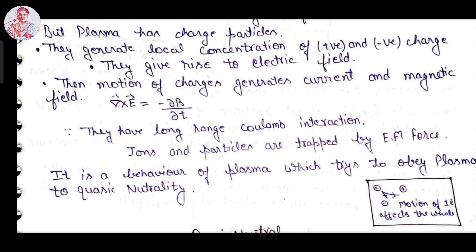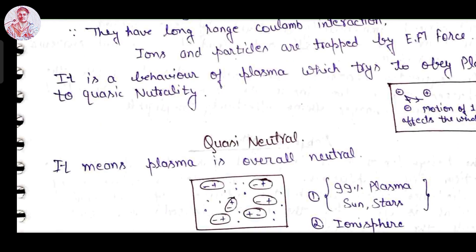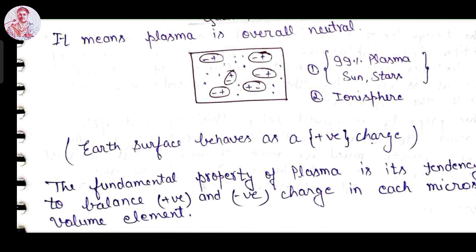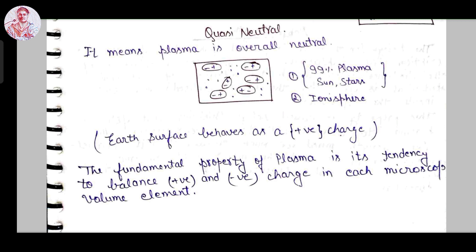Now let's see what is quasi-neutrality. It means plasma is overall neutral. Our sun, in which 99 percent is plasma, and stars also consist of 99 percent plasma. Our Earth's ionosphere consists of plasma; Earth's surface behaves as a positive charge. The fundamental property of a plasma by which it tends to balance the positive and negative charges in each microscopic volume element is known as quasi-neutrality.